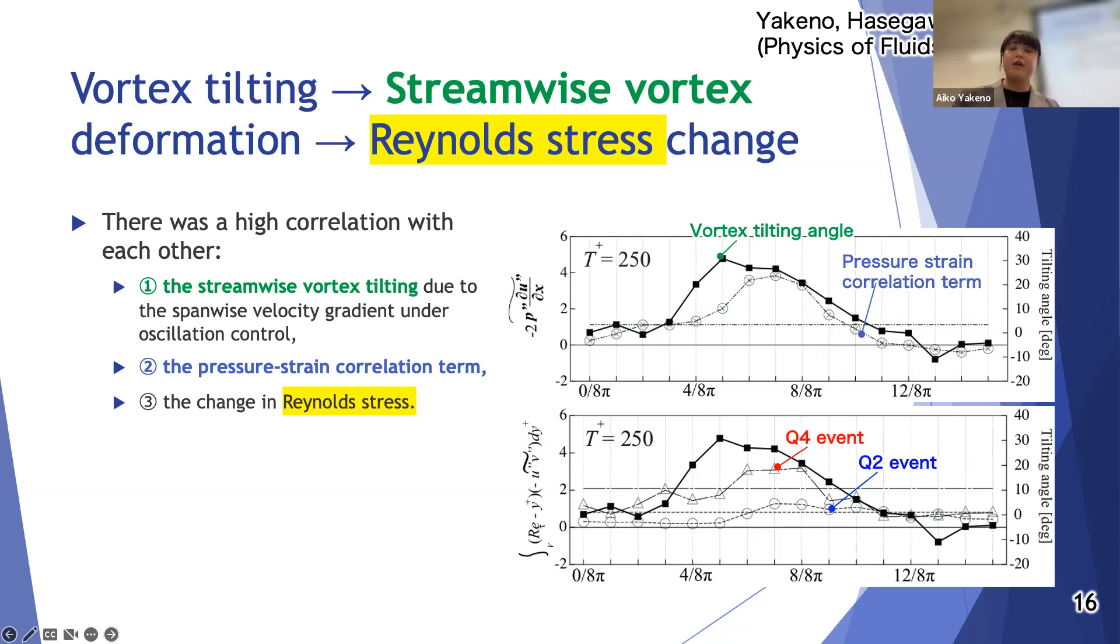Here we know the change in Reynolds shear stress is caused by the shooting of the vortex. Then the reason why the friction drag increases in the case of wrong period can be explained. When the control period is wrong, energy redistribution is promoted and even happens in a certain phase, totally the drag is increased.